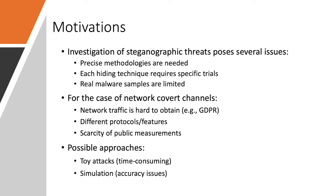Specifically for the case of network covert channels, there are other problems such as network traffic is hard to obtain due to the GDPR and the privacy problems. So traces need to be complete in order to consider different and most of the possibilities in terms of protocol and traffic features that can be used to contain secret information. And again, there is a scarcity of public measurements to use. There are two main possible approaches that are to develop toy attacks, but this task is time consuming, and to simulate attacks, but these will lead to accuracy issues.